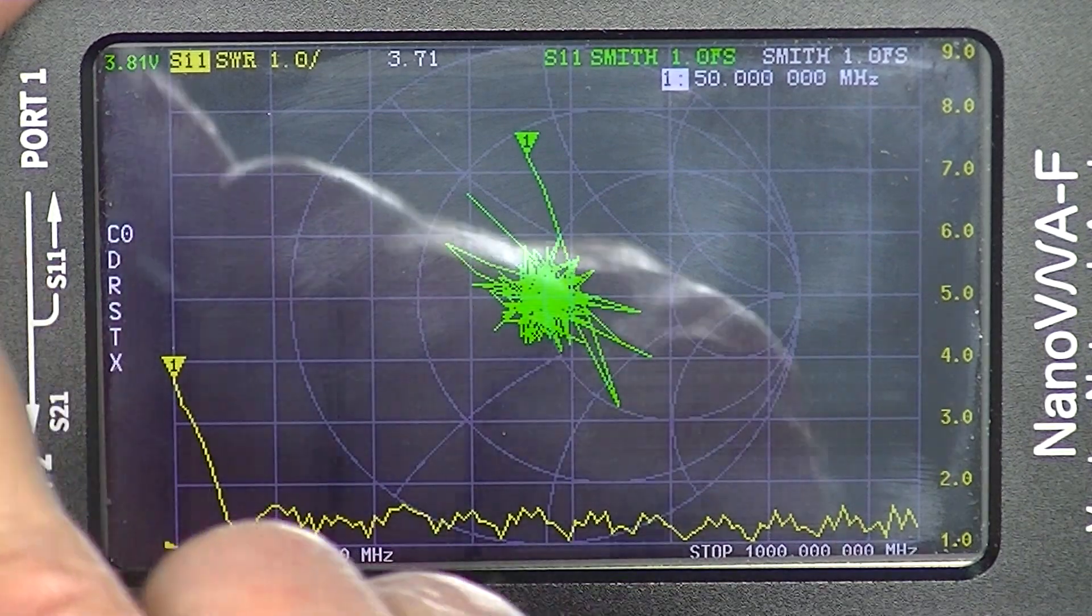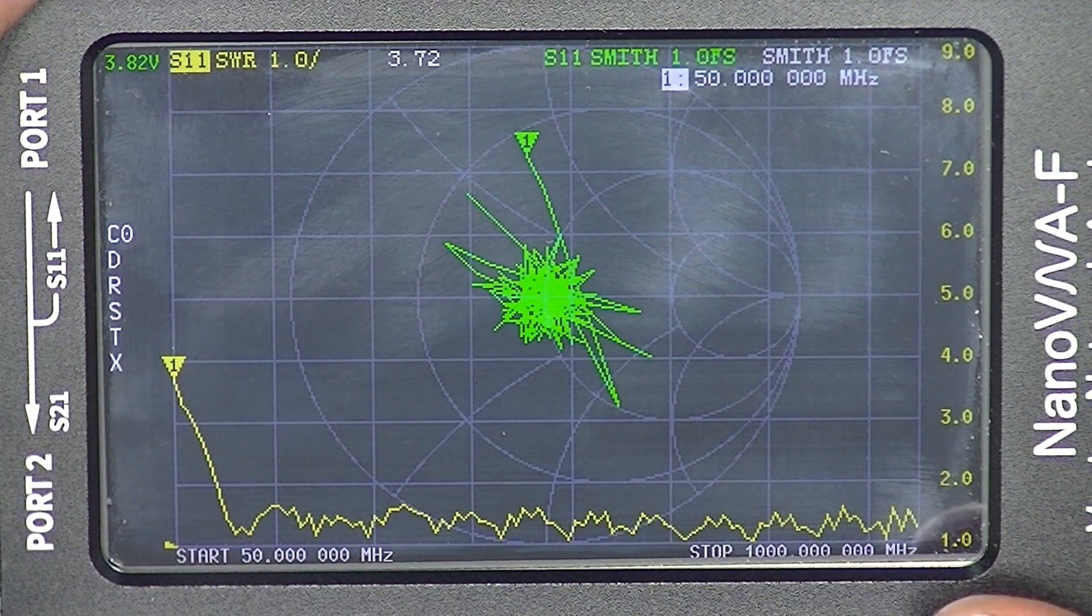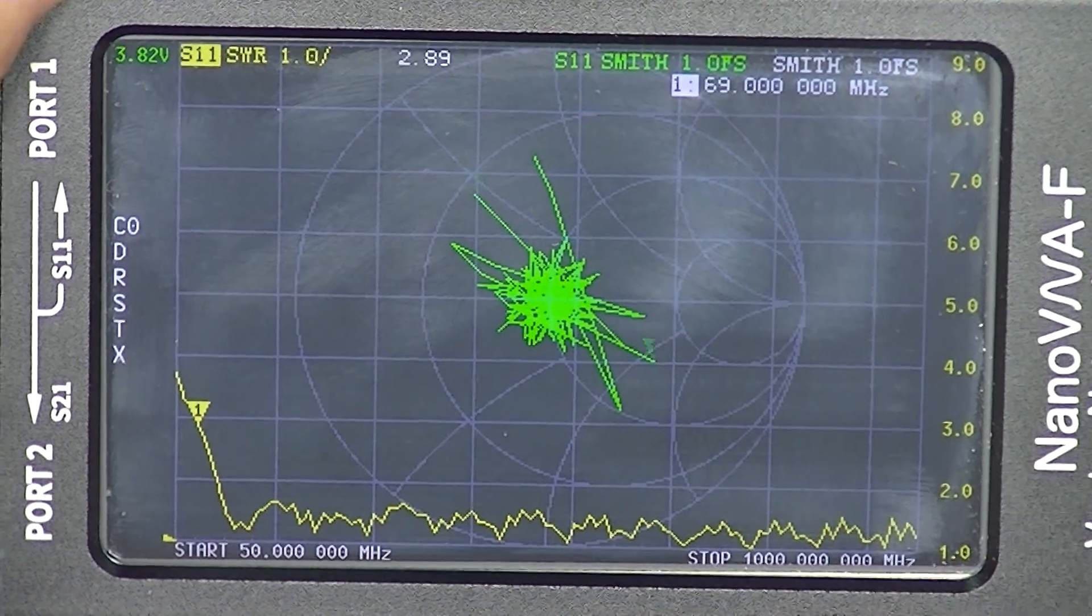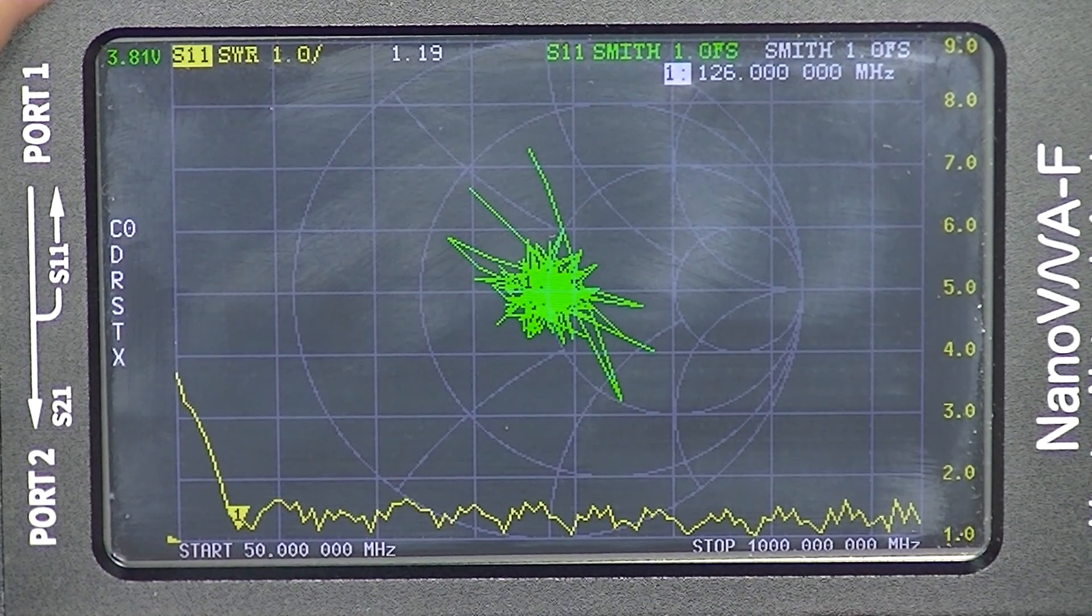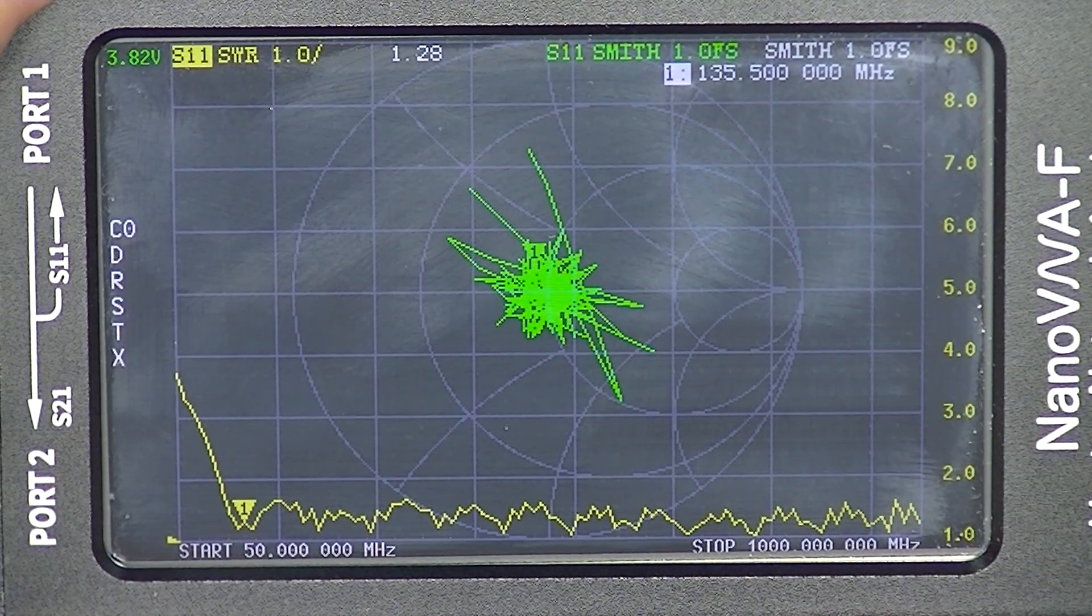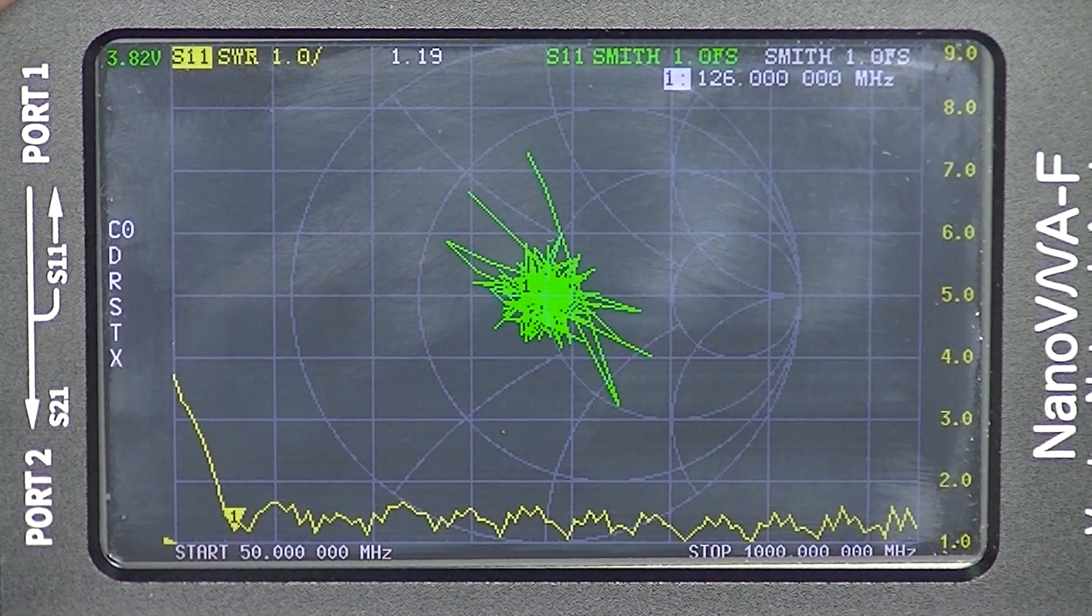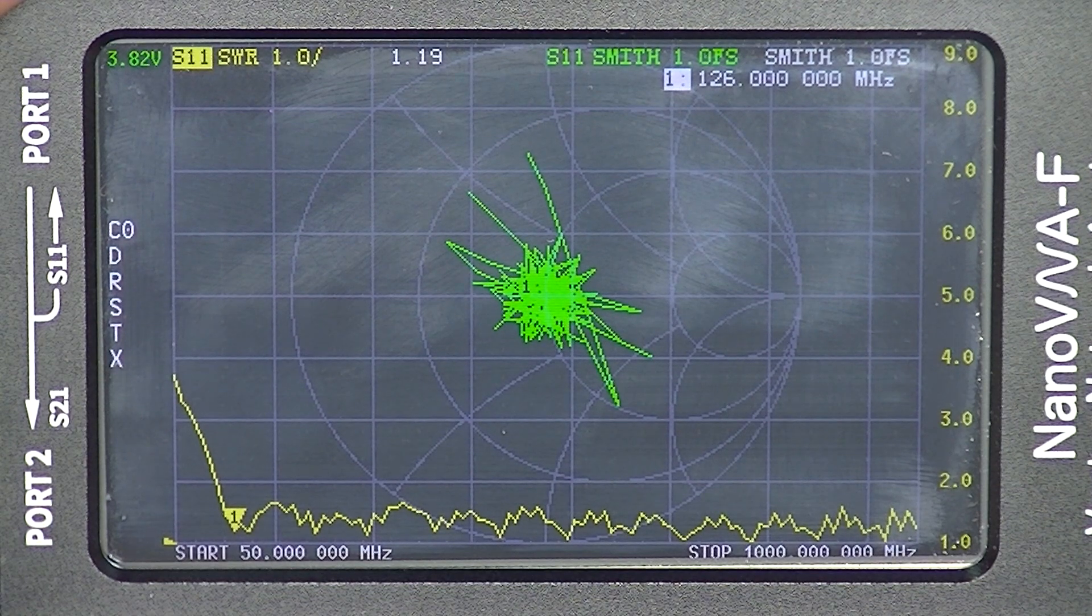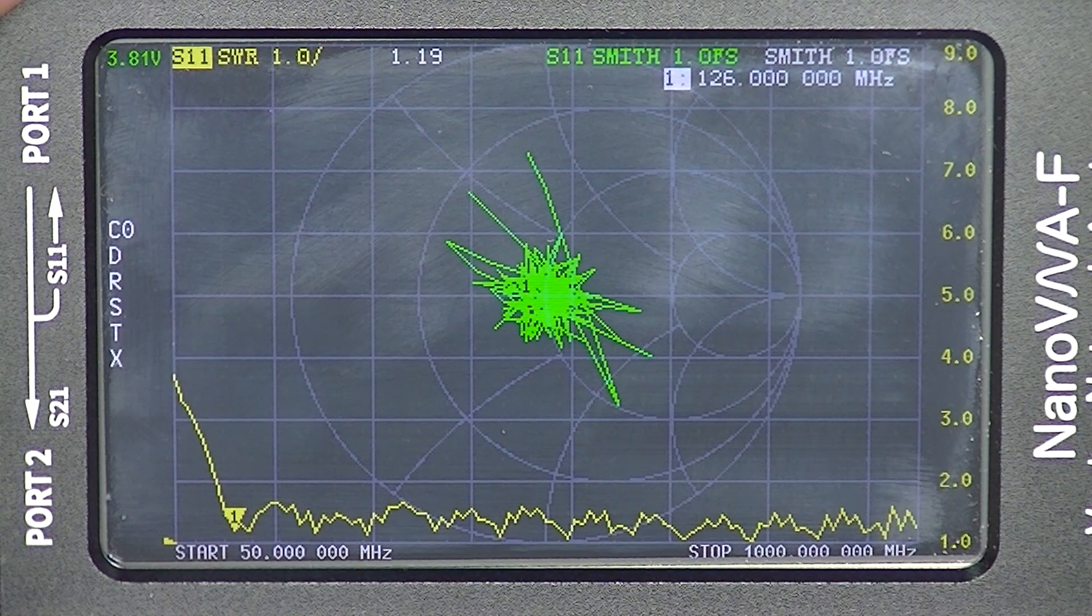This is a Smith chart and yellow is SWR. You see at 50 megahertz the SWR is 3.7. We'll move down to the lowest part here. Now the SWR is 1 to 1.1, 1 to 1.2, at a frequency of...